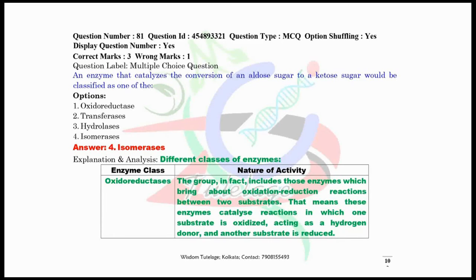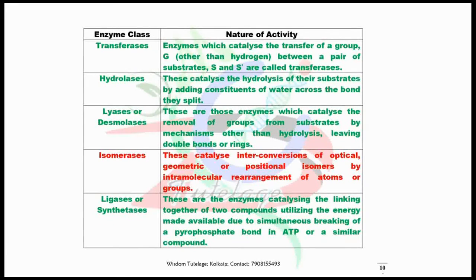Question number 81, an enzyme that catalyzes the conversion of an aldose sugar to a ketose sugar would be classified as an isomerase enzyme. I have given here the entire classification of the enzymes. There are basically six different types of enzymes: oxidoreductase, transferase, hydrolase, lyase, isomerase, and ligase. You have to remember the other options also.